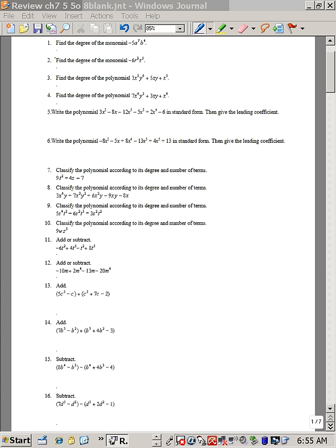Number two says define the degree of the monomial. In order to find the degree of a single term, you add the exponents together, so this degree would be eight.